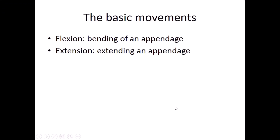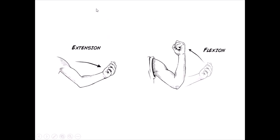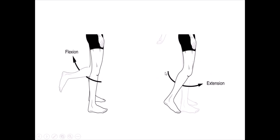Just in case you weren't paying attention — maybe you were staring at my muscles — let's make sure you understood. The basic movements across joints are flexion, when you bend your appendage (your arm, your leg, or your foot), and extension, when you extend that appendage. So this is extension, and this is flexion, and this is extension of the leg, and flexion of the leg.